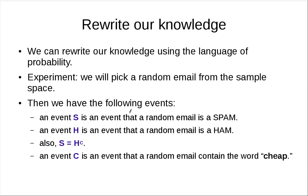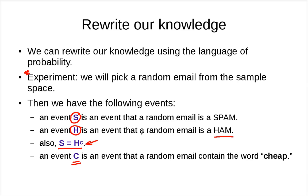So we can rewrite our knowledge using the language of probabilities. Our experiment is to pick a random email from a sample space. There are three events we are interested in: event S — a random email is spam; event H — a random email is ham, which is not spam; and event C — a random email contains the word cheap.